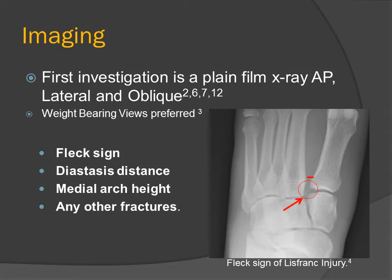Imaging plays an important role in diagnosing, staging, and classifying Lisfranc injuries. The first mode of imaging is typically a plain film x-ray AP, lateral and oblique. Weight bearing views are typically preferred because they will show stress to osseous structures as a result of ligamentous injuries. The hallmark sign is the fleck sign, which implicates complete avulsion of the Lisfranc ligament.